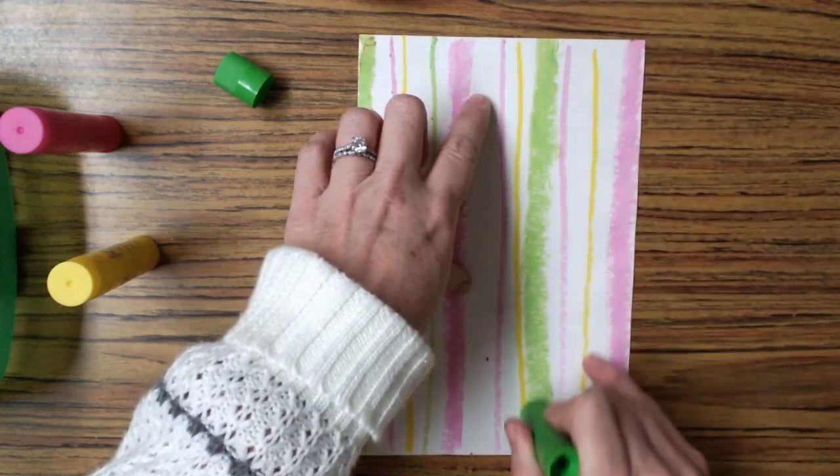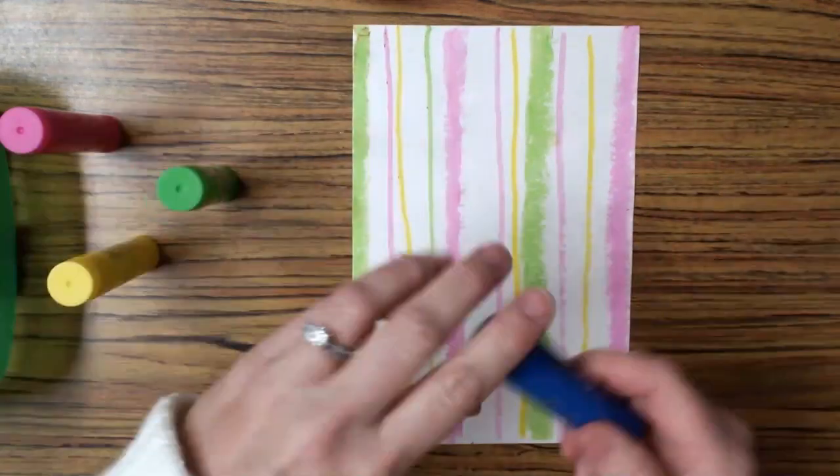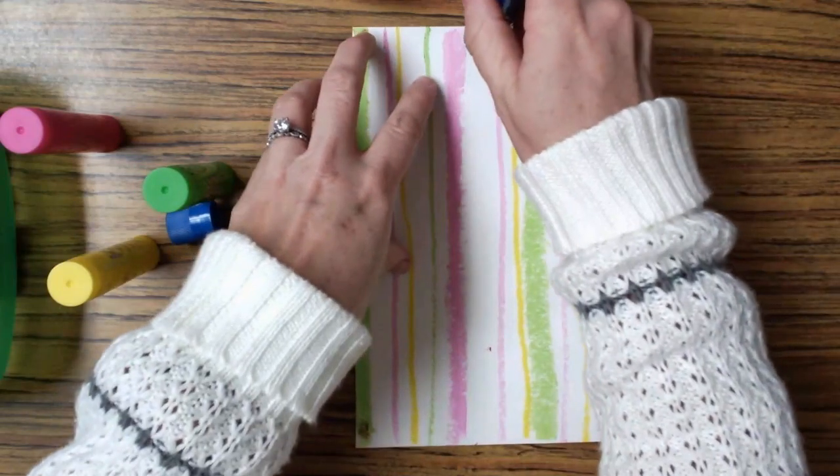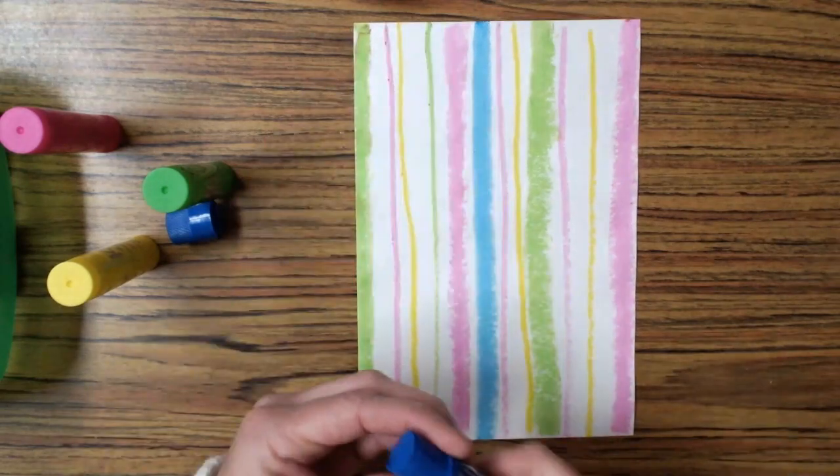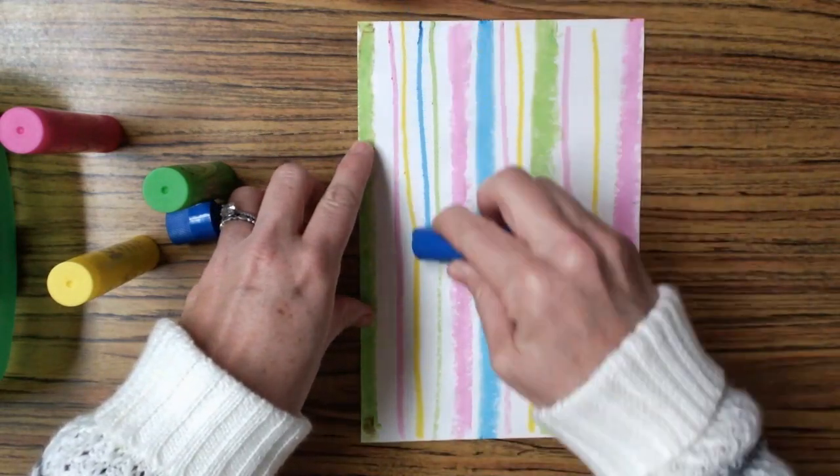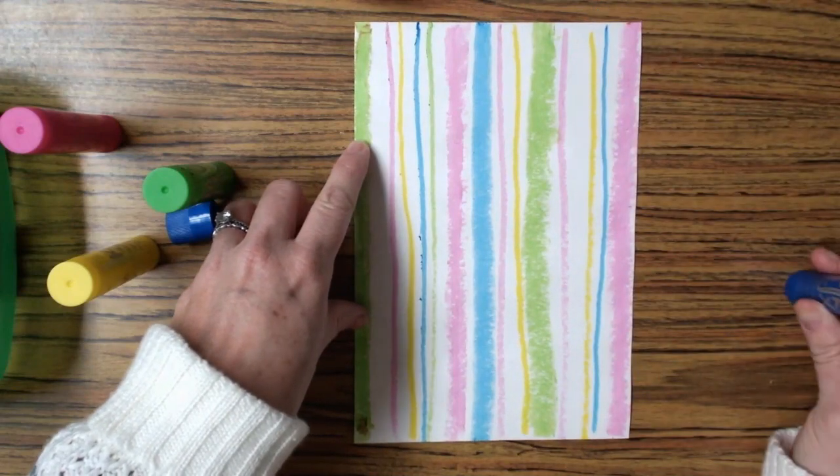If you need to go over your line twice, that is great, because you'll get a richer color. The last color I'm using here is blue, and I might not use this one as much as all my other colors, because I don't have as much space left on my paper. So I'm just going to add a fat line and two skinny lines.